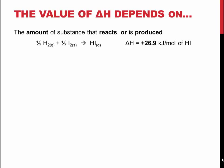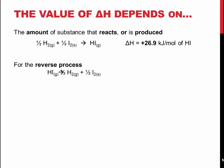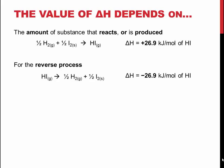The enthalpy change for a reverse process is the same magnitude as the enthalpy for the forward process; however, it is of opposite sign. This is shown on the slide by the reaction of hydrogen and iodine gas to produce hydrogen iodide. However, as shown below, different phases of the products or reactants can lead to different enthalpy values.